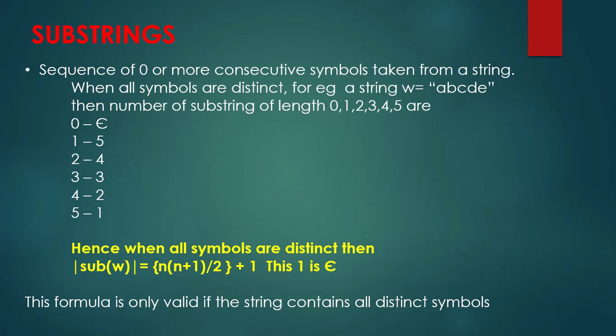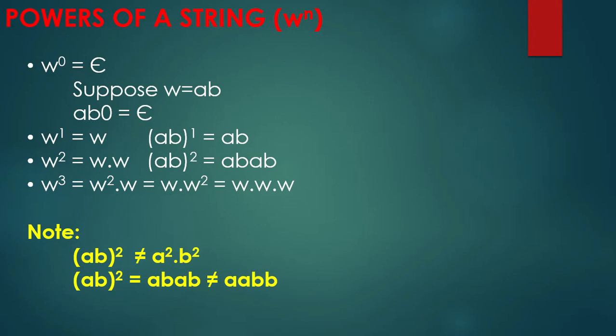The next terminology is power of a string. W raised to n: any string raised to zero is epsilon — the null string. For example, AB to the power zero is epsilon. AB to the power two equals AB concatenated with AB. Note that AB squared is not equal to A squared B squared — it is a string operation, not a mathematical multiplication.